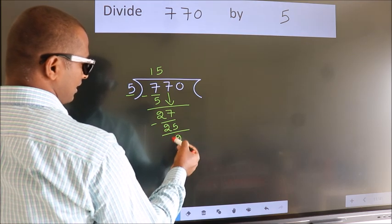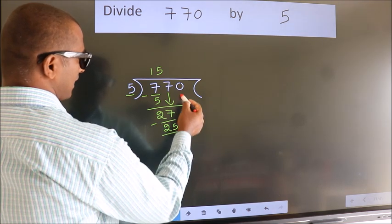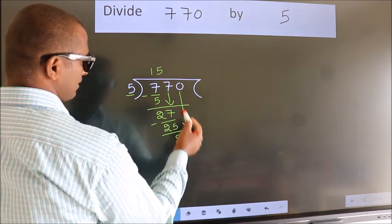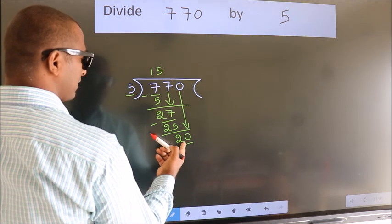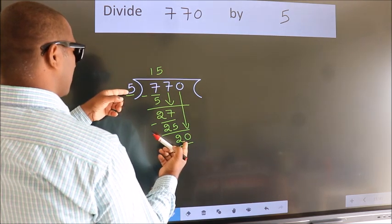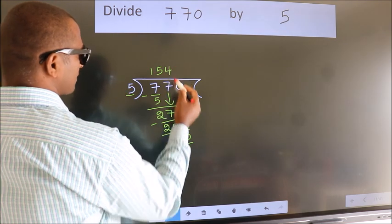We get 2. After this, bring down the beside number. So 0 down, so 20. When do we get 20 in the 5 table? 5 4s is 20.